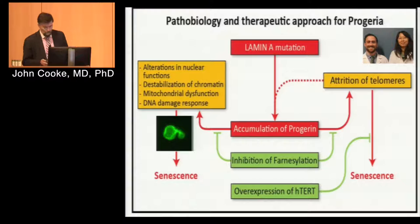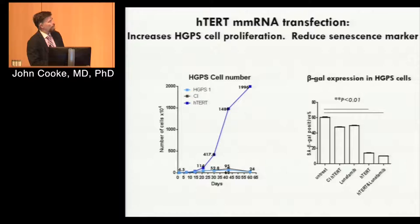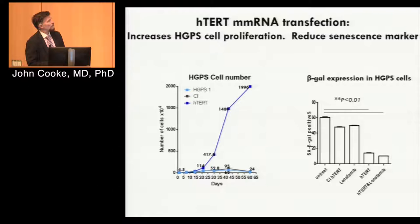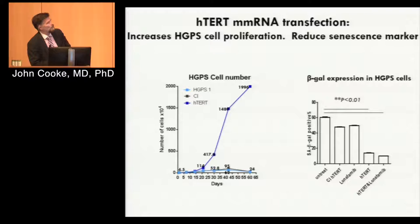The cells from these children behave as senescent cells — these are fibroblasts derived from these children. Yanhui Li showed that these cells are very different from normal healthy fibroblasts in that they don't proliferate well at all. Starting with 25,000 cells, she had great difficulty getting more cells over time. After several months, they barely returned to 25,000. But cells treated with H-TERT showed a tremendous response. In addition, markers of senescence observable in these cells were going down dramatically with H-TERT treatment.